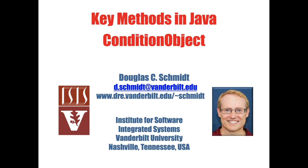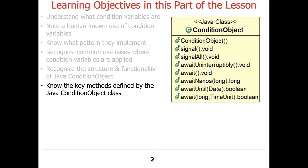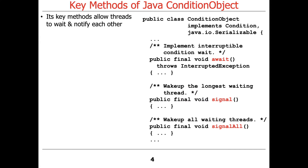Now that you've been exposed to the structure and functionality of Java ConditionObject, let's talk about some of its key methods. We're going to focus on a handful of them. The key methods in Java Condition Objects allow threads to wait and notify each other, and the names are carefully chosen to avoid conflicts with existing methods inherited from Java Object. The methods we're going to talk about are await, signal, and signalAll.